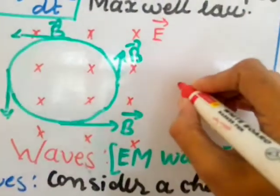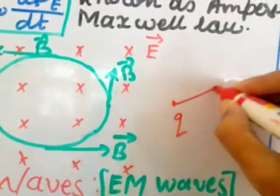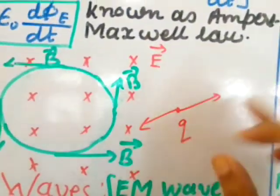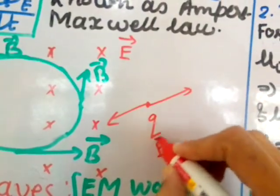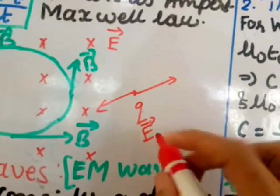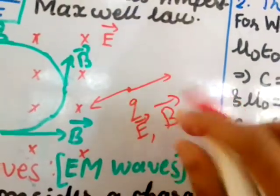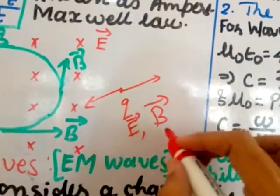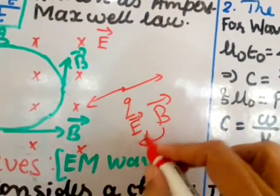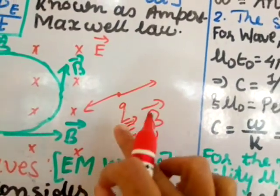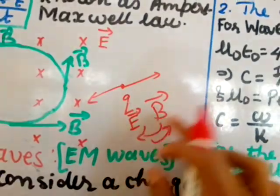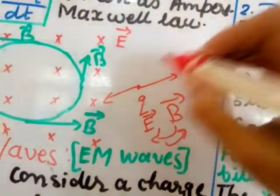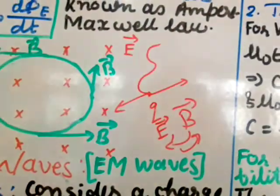Consider a charge Q that is oscillating. When it oscillates, it will create an oscillating electric field, and this oscillating electric field will create an oscillating magnetic field. This again will be the source for creating the electric field, and this electric field will create the magnetic field. They will regenerate each other, and as a result we will get electromagnetic waves.